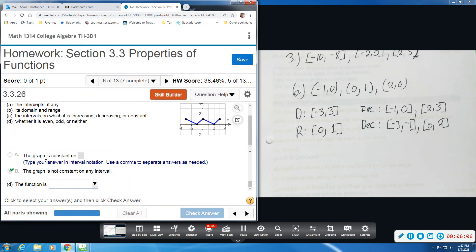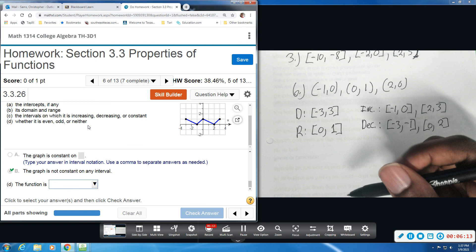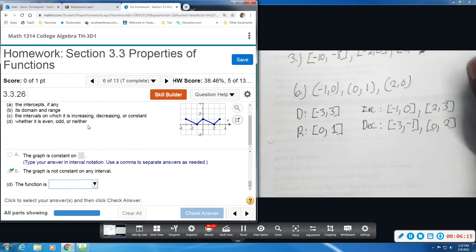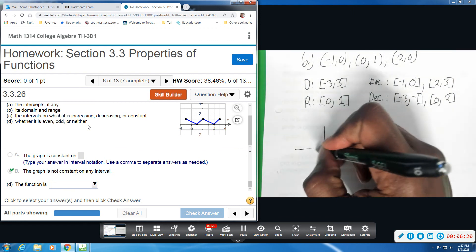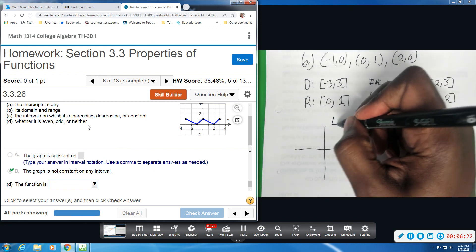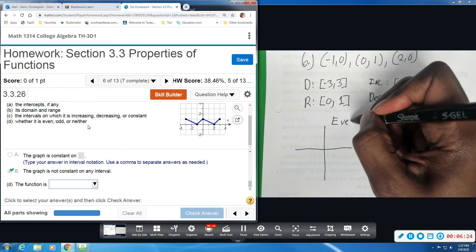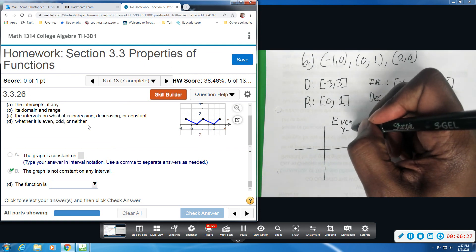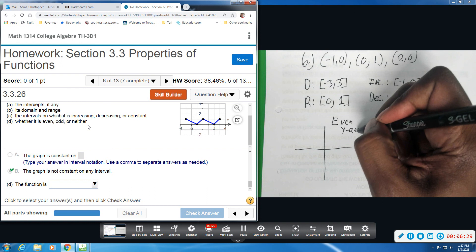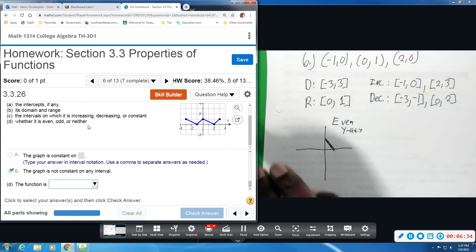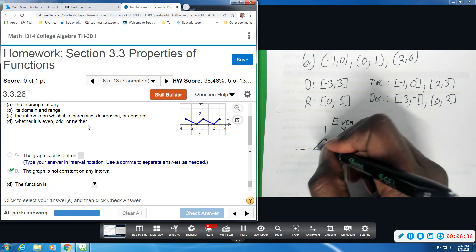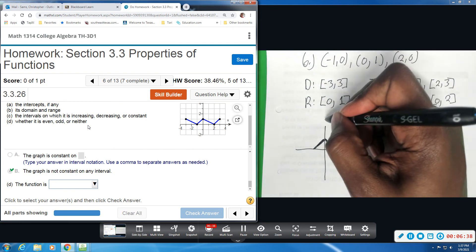And then last, we want to know is the function even, odd, or neither. So this deals with symmetry. So it's been a little bit, but let's talk about it visually. So a function is even if it has y-axis symmetry, which means whatever part I have on this side, if it's a mirror image, I have that same image over here. This is the y-axis.